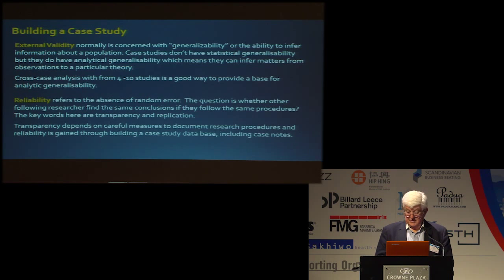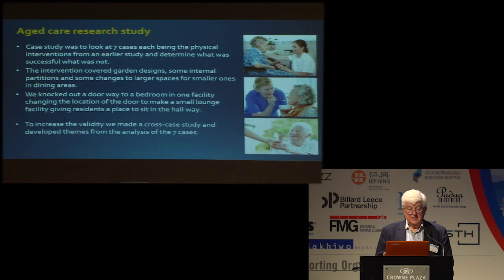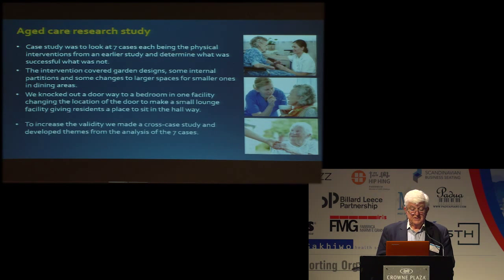Now, what I did was look at seven cases to do with physical investigations from an earlier study, which determined whether the interventions were successful or not. Interventions covered garden designs, some internal partitions were changed, some changes to larger spaces for smaller ones. We knocked out a doorway to a bedroom in one facility, changing the location of the door to make a small lounge, which gave residents a place to sit. To increase validity, we made a cross-case study between the seven of them and developed themes from the analysis.